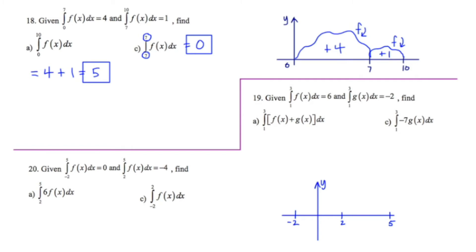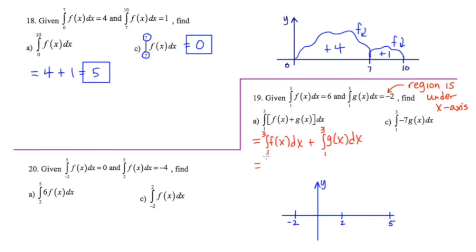In number 19, we're given the definite integral of F from 1 to 3 with area 6, and the definite integral of G from 1 to 3 with area negative 2. Negative area means the region is under the x-axis. In 19a, I split this up because it's a multi-term expression into two definite integrals. The integral of F from 1 to 3 is 6, and the integral of G from 1 to 3 is negative 2, giving an overall area of 4.